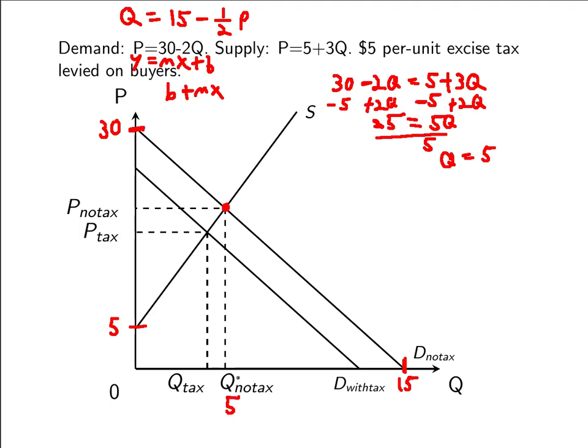Now the p, you should get the same p whether you plug in q equals 5 to this equation. So you'd get 20. 3 times 5 is 15 plus 5 is 20. Or this equation, you get 30 minus 2 times 5. So 30 minus 10 is 20. So we know this price is going to be 20.